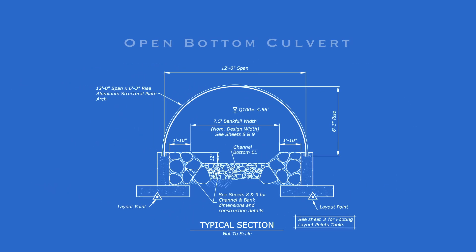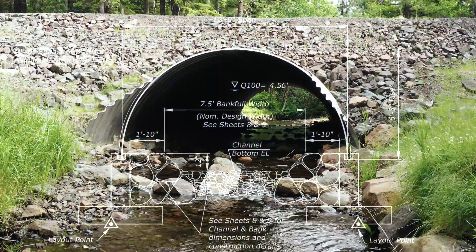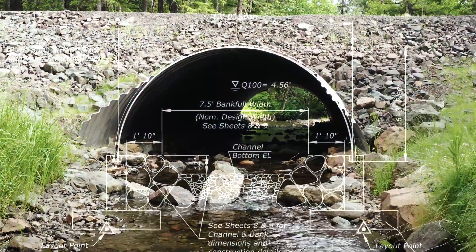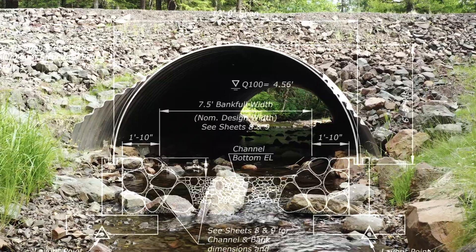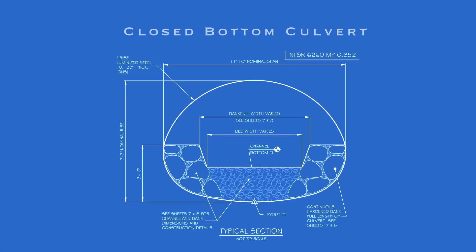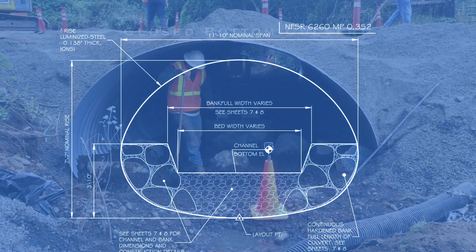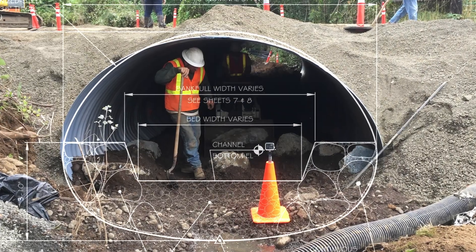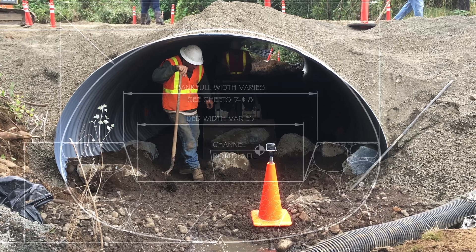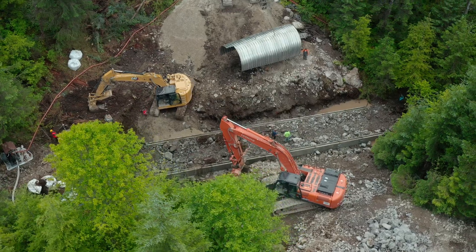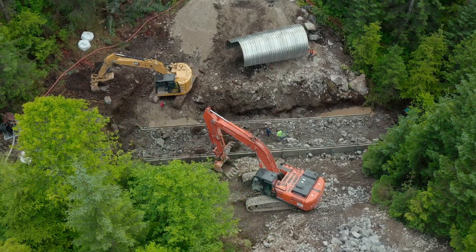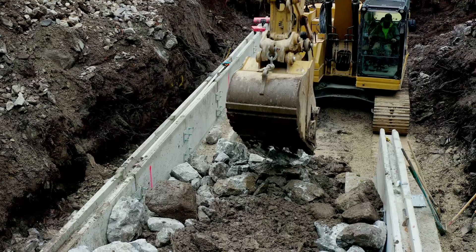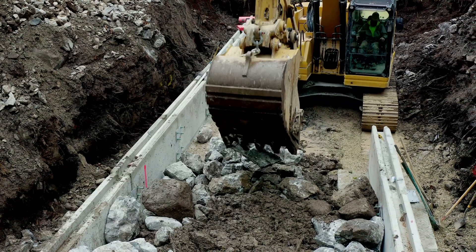The first is called an open bottom culvert. This design requires crews to remove the old culvert and road, and then reconstruct a simulated stream directly on the ground. The second type of structure is called a closed bottom culvert, where after removal, the stream is simulated inside a rigid structure. In this video, we'll be taking you through the full construction process on an open bottom culvert, because it's easier to see the techniques required without a top on.